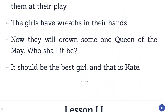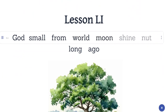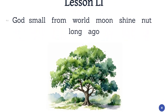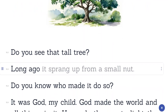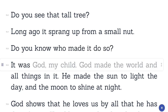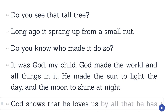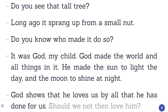Lesson 51. God. Small. From. World. Moon. Shine. Nut. Long. Ago. Do you see that tall tree? Long ago it sprang up from a small nut. Do you know who made it do so? It was God, my child. God made the world, and all things in it. He made the sun to light the day, and the moon to shine at night. God shows that he loves us by all that he has done for us. Should we not then love him?